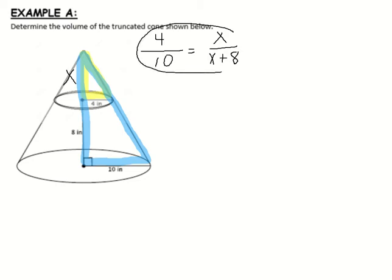So this is a proportion. I'm going to solve this proportion for x, so I will then know the heights of the two cones. When you solve a proportion, you cross multiply. You take the one diagonal and multiply those, then take the other diagonal and set that equal to the product. So here we're going to have 4 times x plus 8. On the one diagonal, the other one 10x.